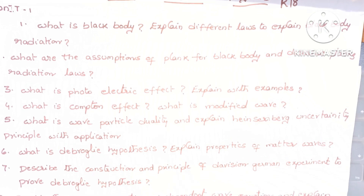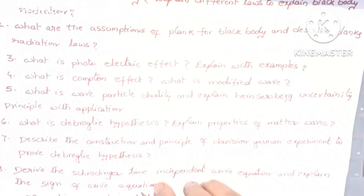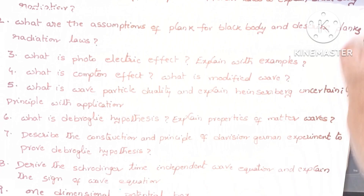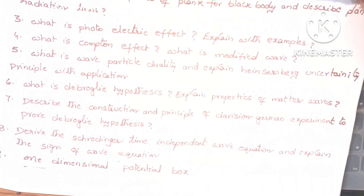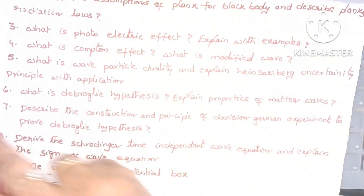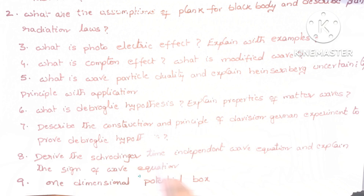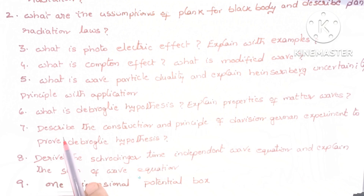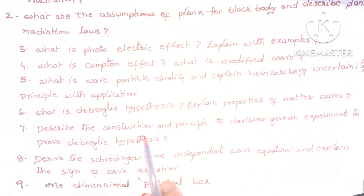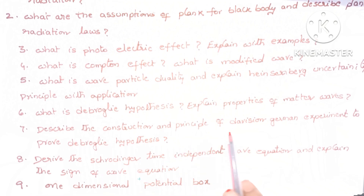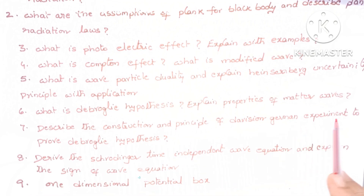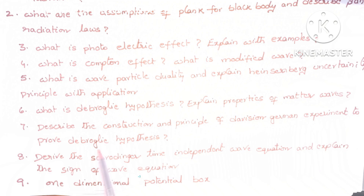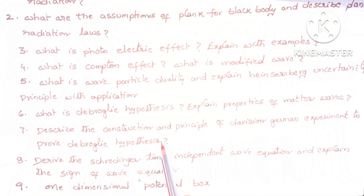The fifth question on Heisenberg's uncertainty principle is very very important. Sixth question is what is de Broglie hypothesis? Explain the properties of matter waves.